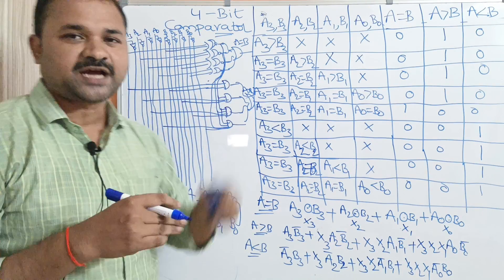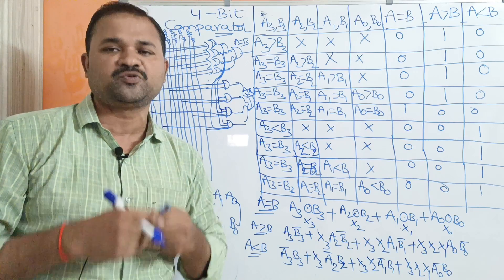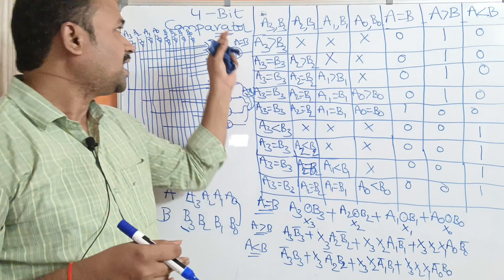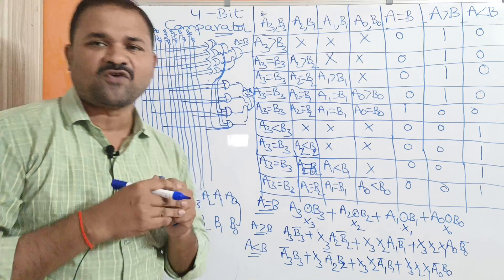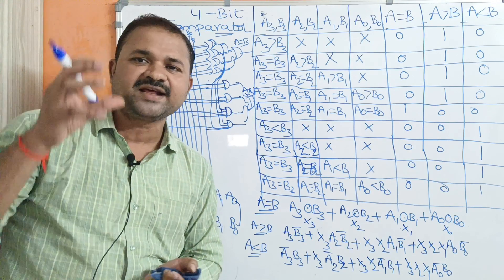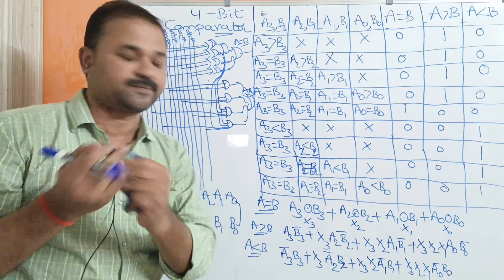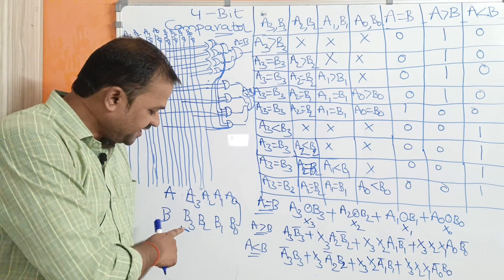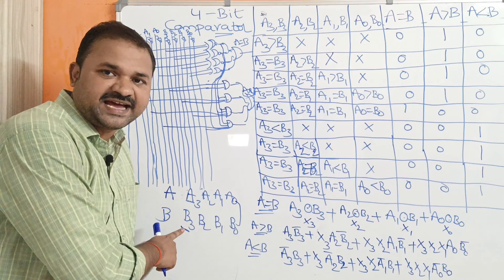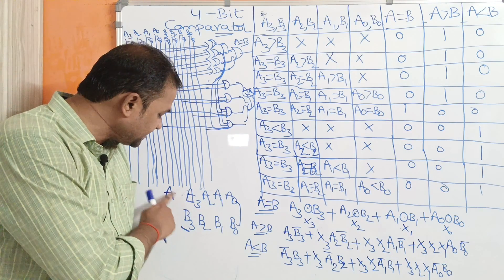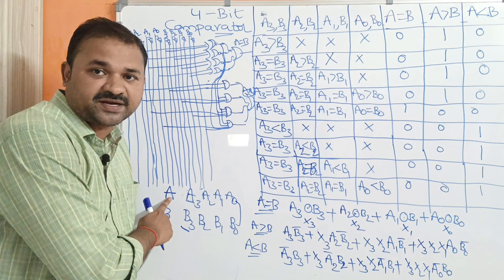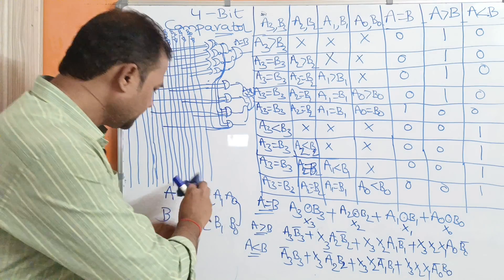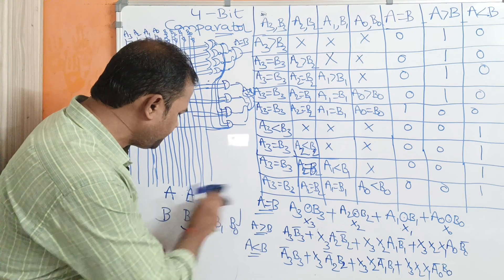We know that a comparator mainly produces three outputs: equal to, greater than, and less than. The comparison will be done bit by bit. First, A3 will be compared with B3. If A3 is greater than B3, then we can say that the first number is the biggest number, so A greater than B is 1.